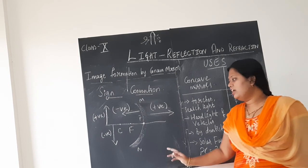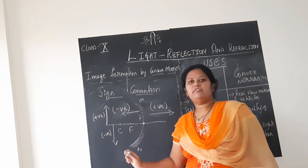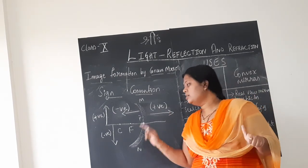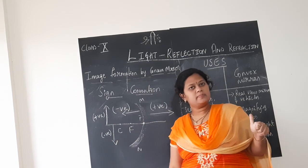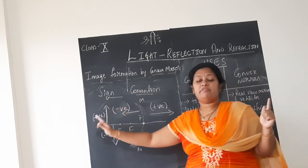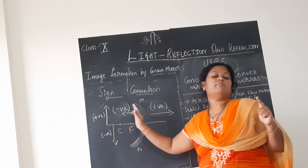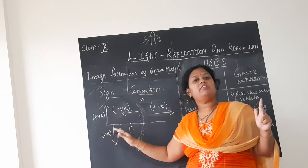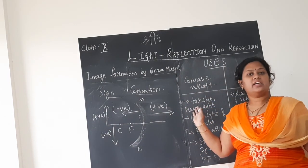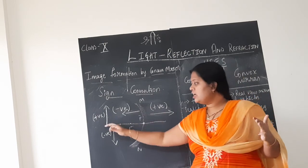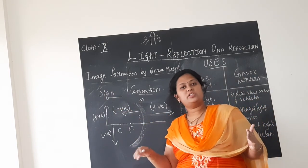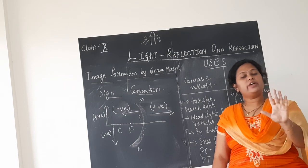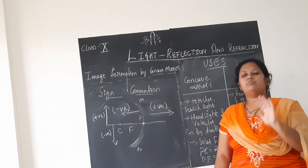These are the five points under sign convention. First: all the distances are measured starting from the pole of the mirror, or the object is always placed on the left hand side of the mirror, so that the light always comes from the left hand side. Third point: the distances towards the left hand side are taken as negative and all the distances towards the right hand side are taken as positive. Fourth point: all the heights measured above the principal axis are taken as positive. Fifth point: all the heights measured below the principal axis are taken as negative. These are the five main points you have to remember in order to solve the problem.